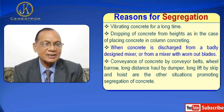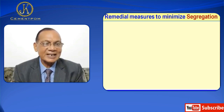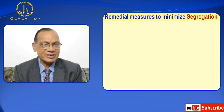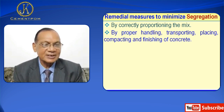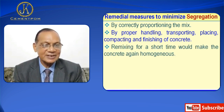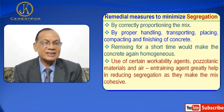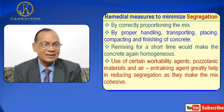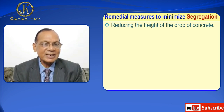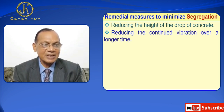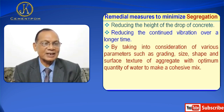Number one is by correctly proportioning the mix. Next, by proper handling, transporting, placing, and compacting of concrete. Then remixing for a short time would make the concrete again homogeneous. Use of certain workability agents, admixtures, and air entraining agents greatly help in reducing segregation as they make the mix cohesive. Reducing the height of the drop of concrete and reducing the continued vibration over a longer time. And by taking into consideration various parameters such as grading, size, shape, and surface texture of aggregate with optimum quantity of water to make a cohesive mix.